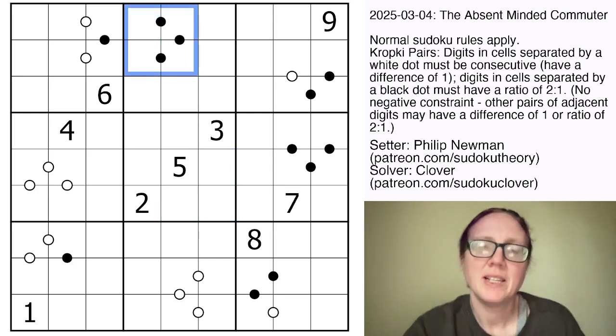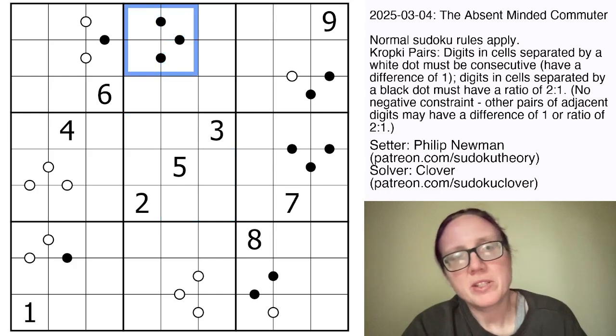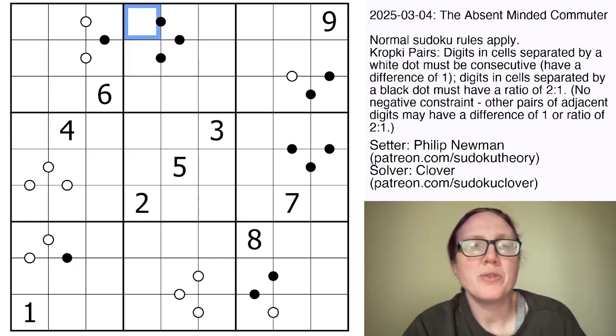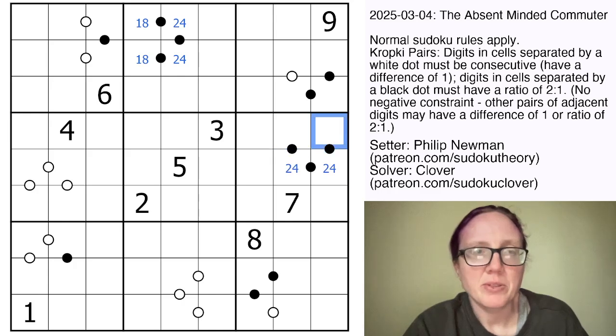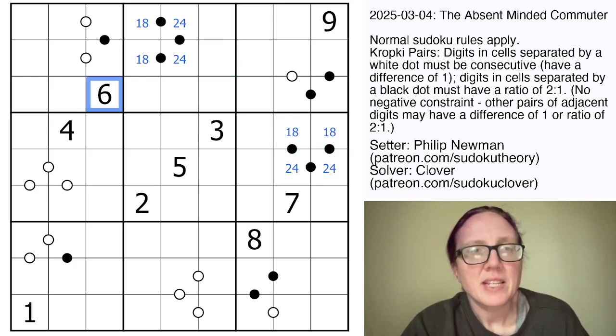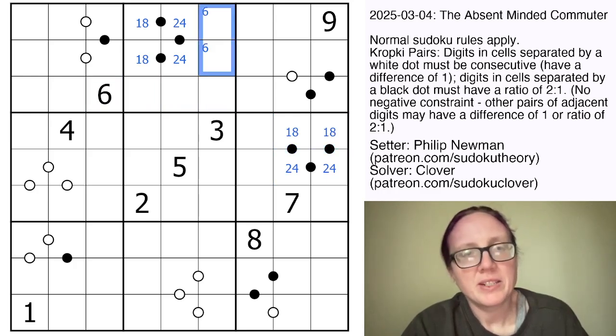So we're going to start here. So there's only one sequence of digits in Sudoku that has a 1 to 2 ratio for 4 digits in a row, and that's 1, 2, 4, 8, so the middle two digits here have to be 2 and 4, and these guys have to be 1 and 8. And the same thing is going to apply right here. And so we know that the 6 can't go in those cells, it has to go there. The 3 can't go in those cells, it has to go here.